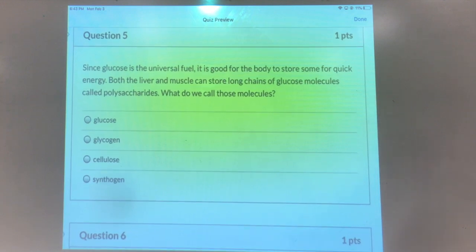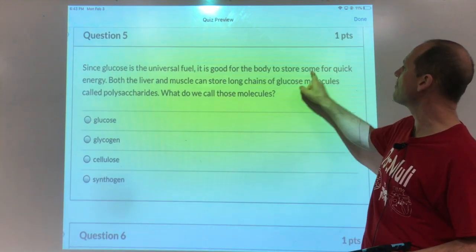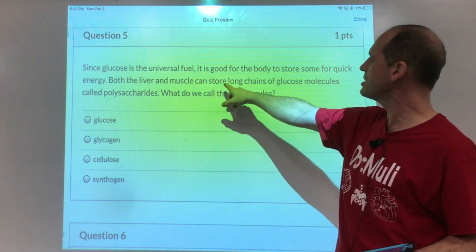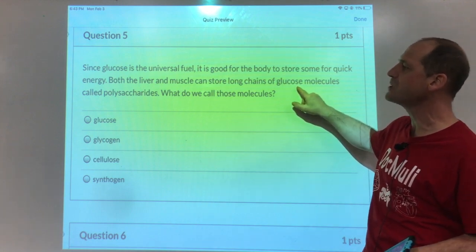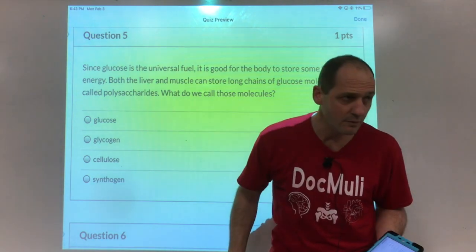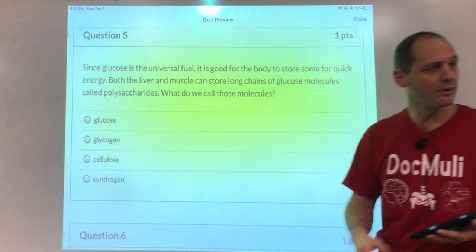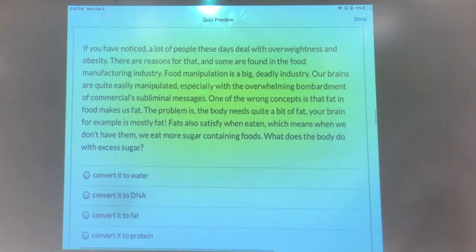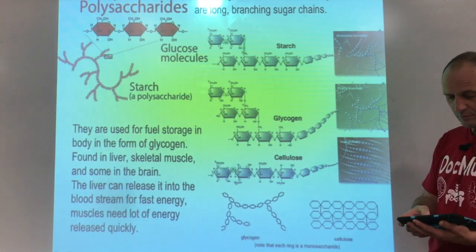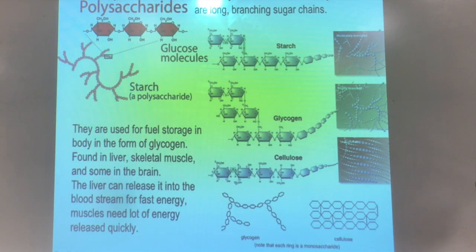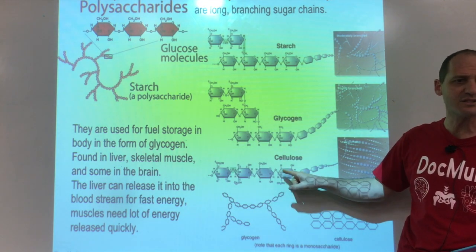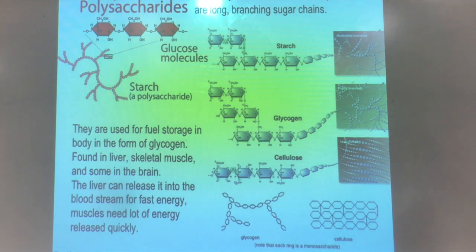Since glucose is a universal fuel, it is good for the body to store some for quick energy. Both the liver and muscle, and a little bit in the brain, can store long chains of glucose molecules called polysaccharides. We call those molecules glycogen in the body. Glycogen is for us, and then cellulose is for plants — we can't eat that, that's the fiber. We can't digest that; that's the fiber for us.